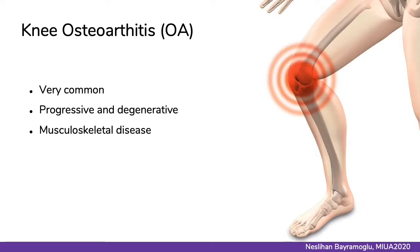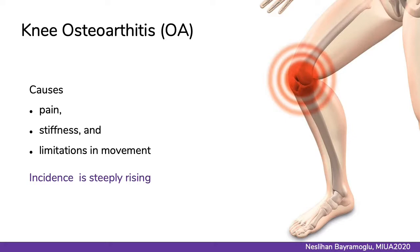Knee osteoarthritis, shortly called OA, is a very common, progressive and degenerative musculoskeletal disease. The condition causes pain, stiffness, and limitations in movement. There are different risk factors such as age, obesity, injury, repetitive use of joints, bone density, muscle weakness, and gender. Unfortunately, the incidence of OA is steeply rising because of the aging population, creating a heavy burden on patients — their quality of life is reduced and there is also a financial impact on society due to treatment cost and time off work. Therefore, any attempt to reduce this burden is precious.